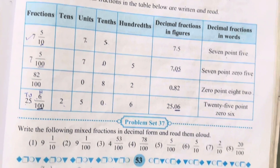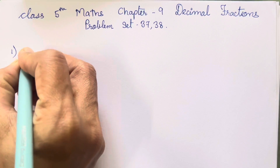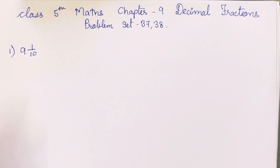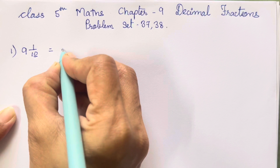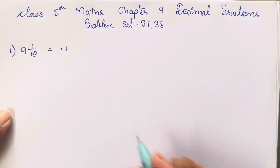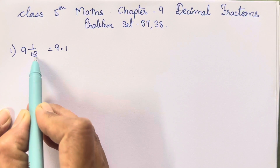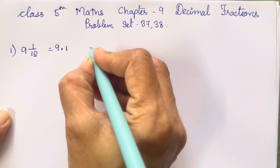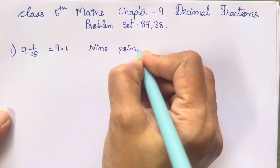In the same way we will solve practice set number 37. The first sum: 9 and 1 upon 10. We have to convert it into decimal form and then read it. There is one zero, so after the decimal point there has to be only one digit. We already have 1, and 9 will come before the decimal. So this is units, and this is tenths. We get 9.1.